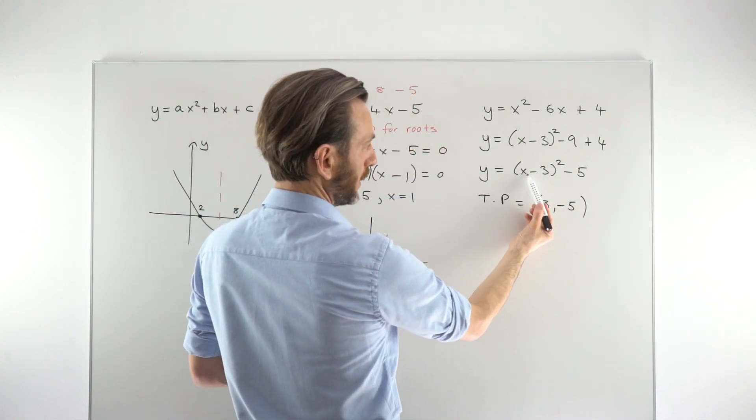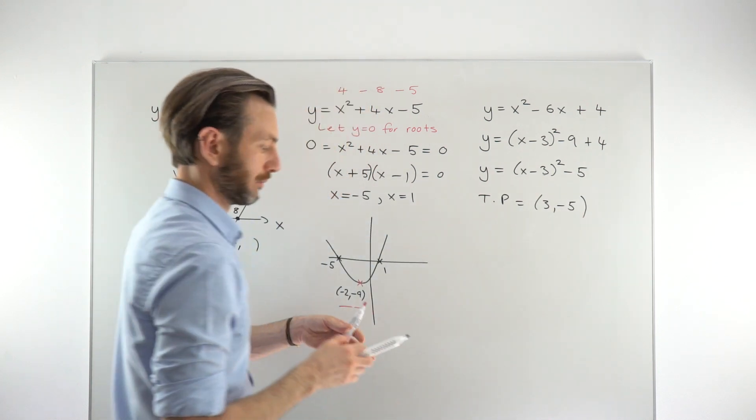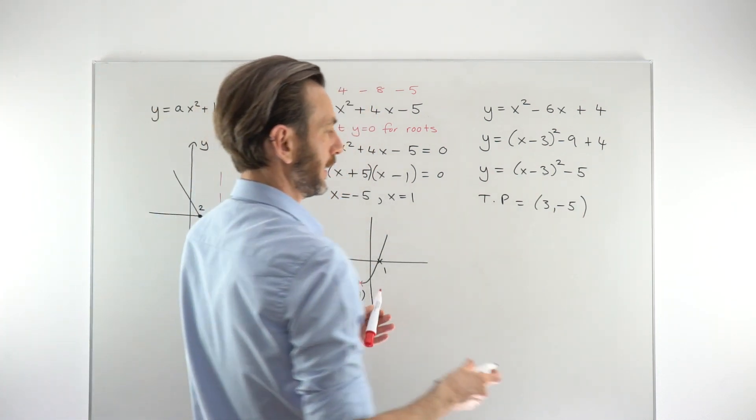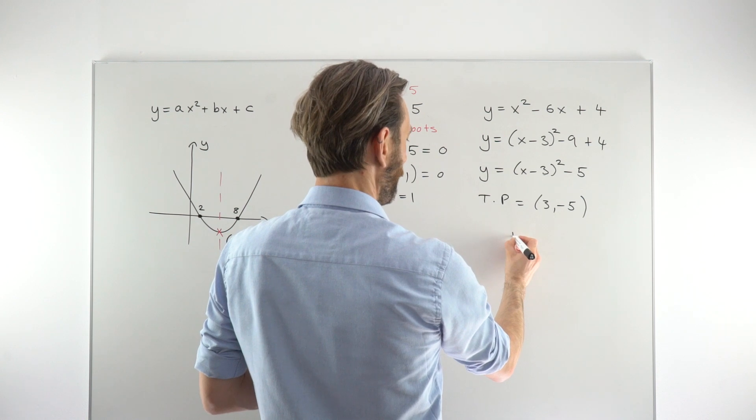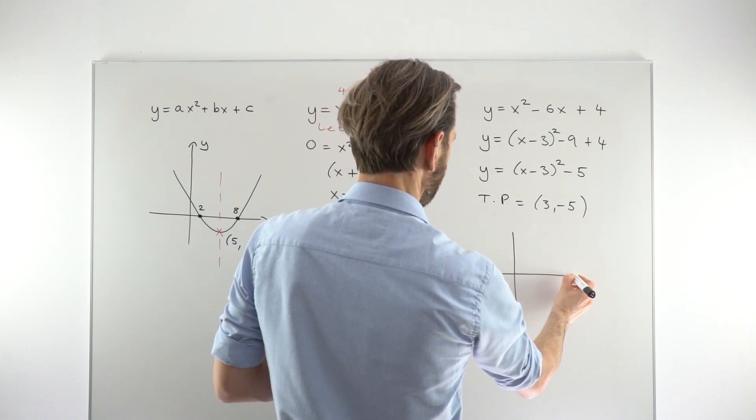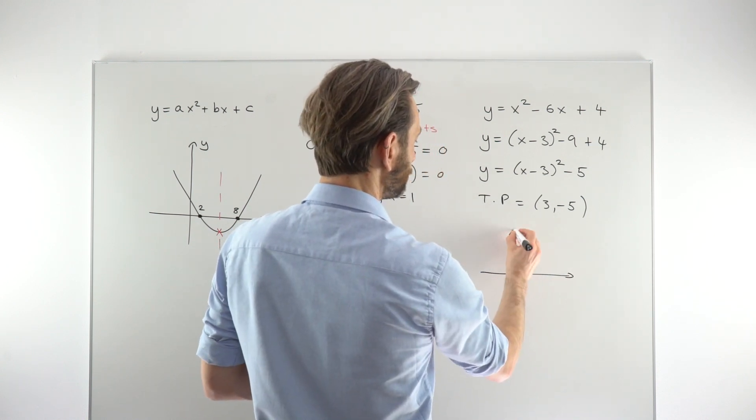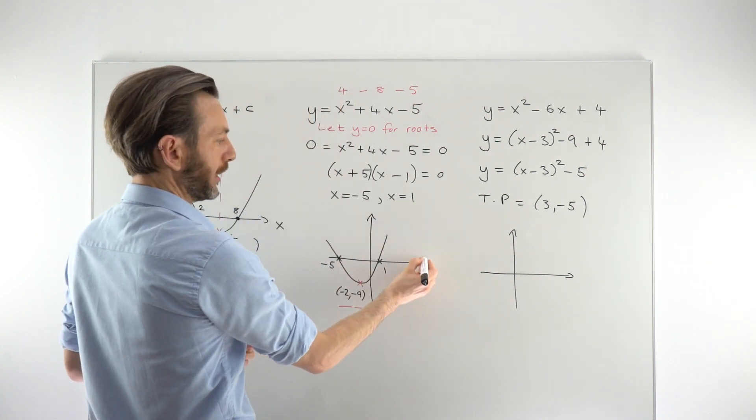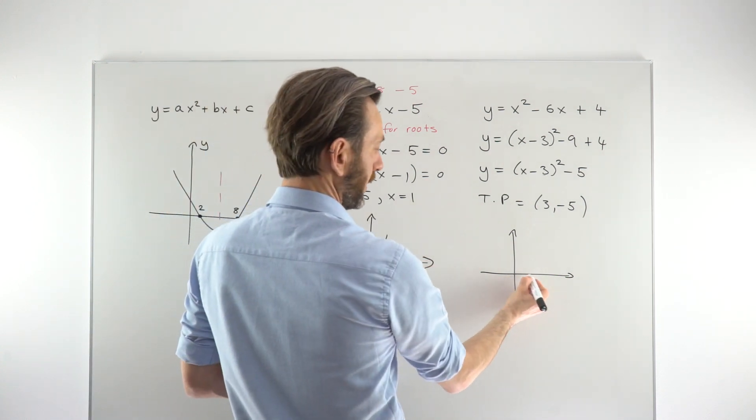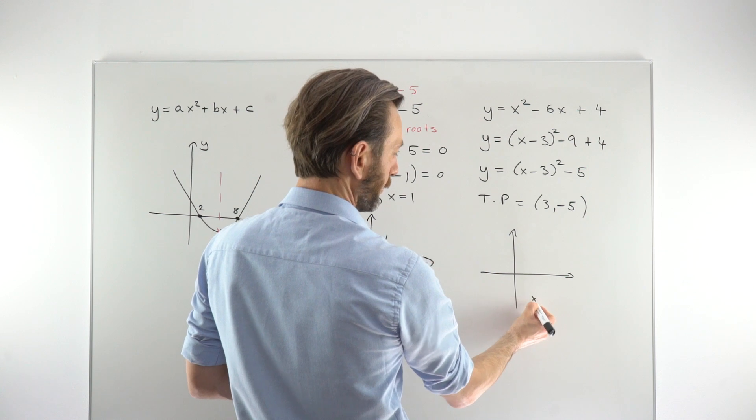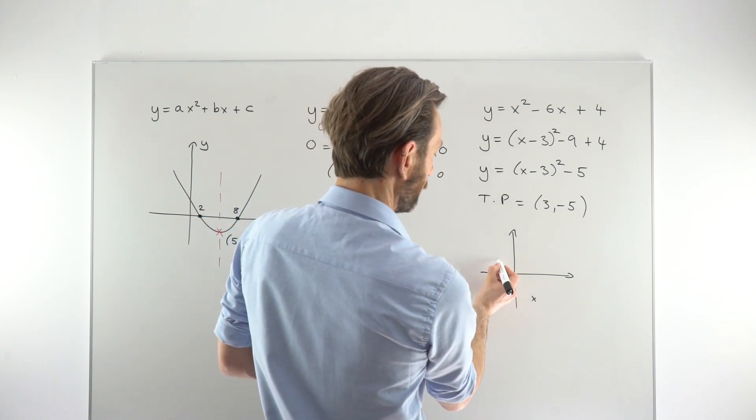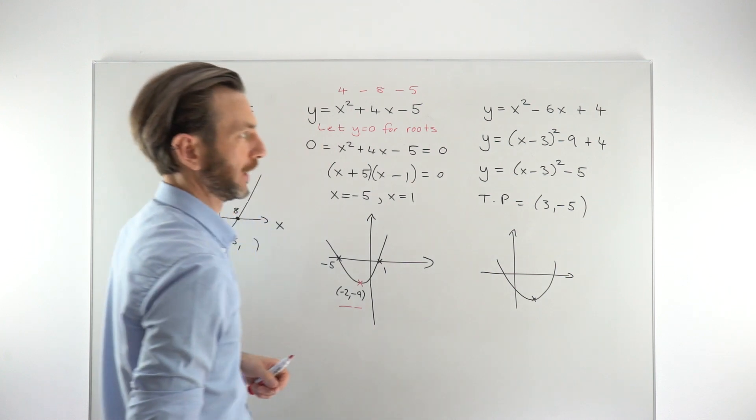If we wanted to then take that and draw a quick sketch, we could mark that point just onto an xy axis. And then, so it's 3 along and then 5 down, so it's going to be somewhere there. And then just fill in your parabola shape, making it turn on that point.